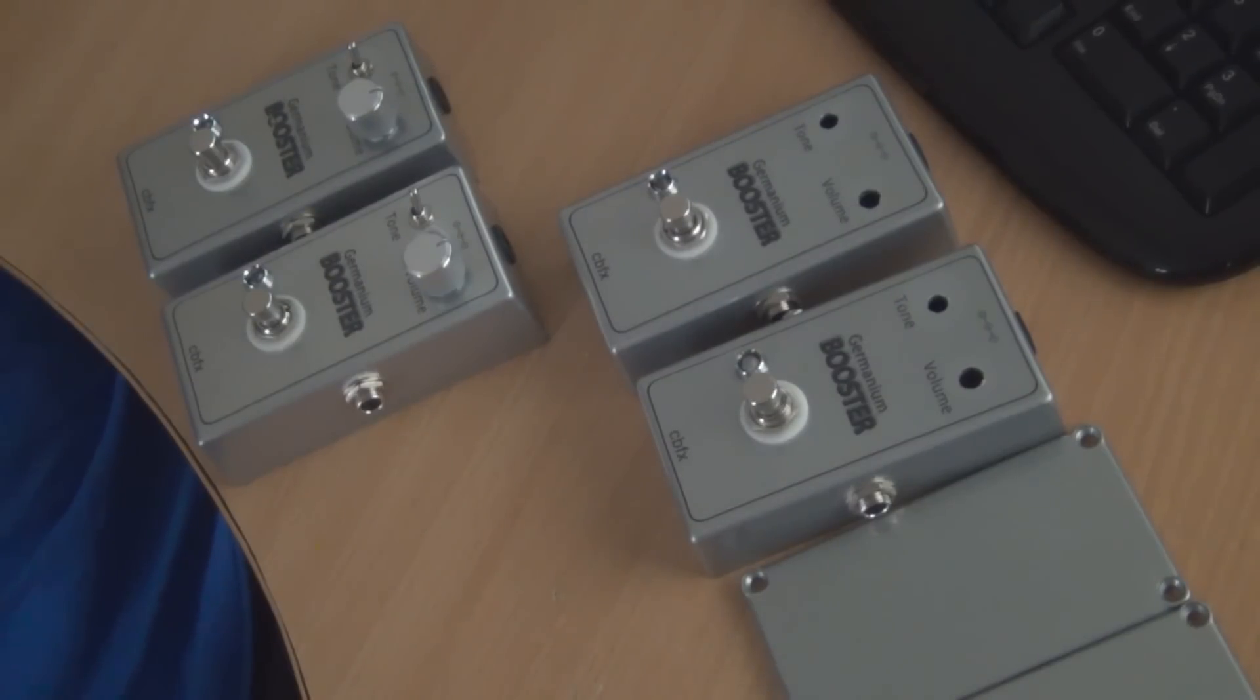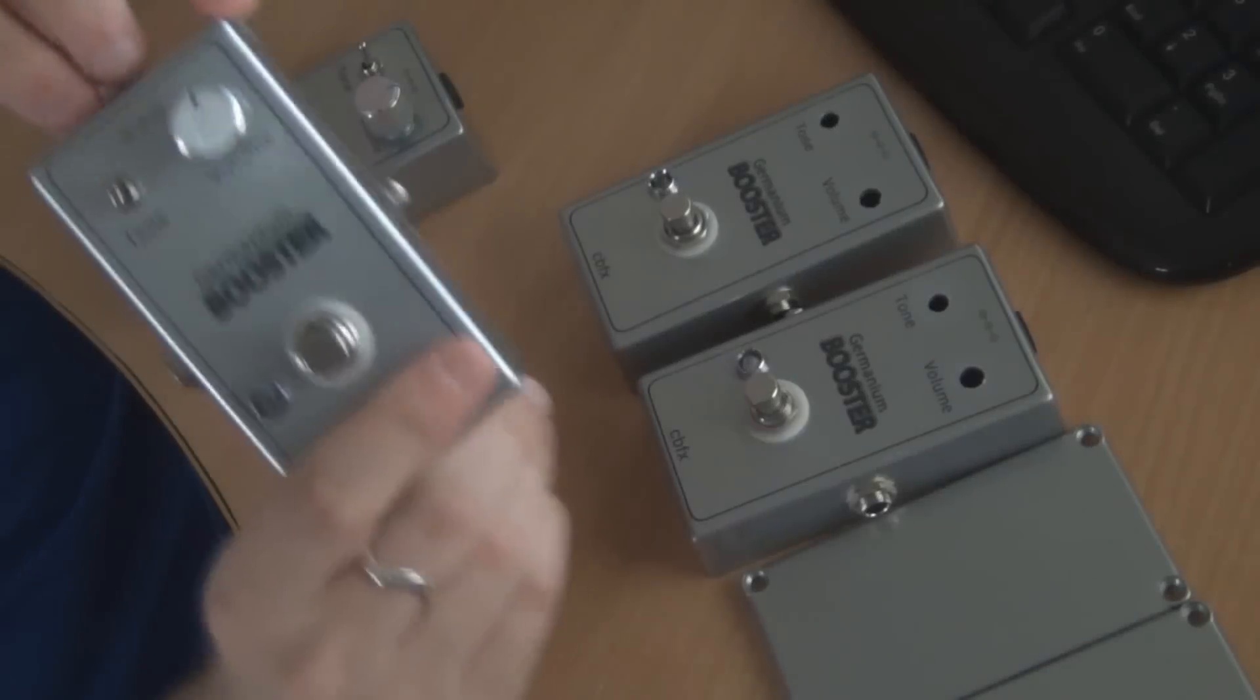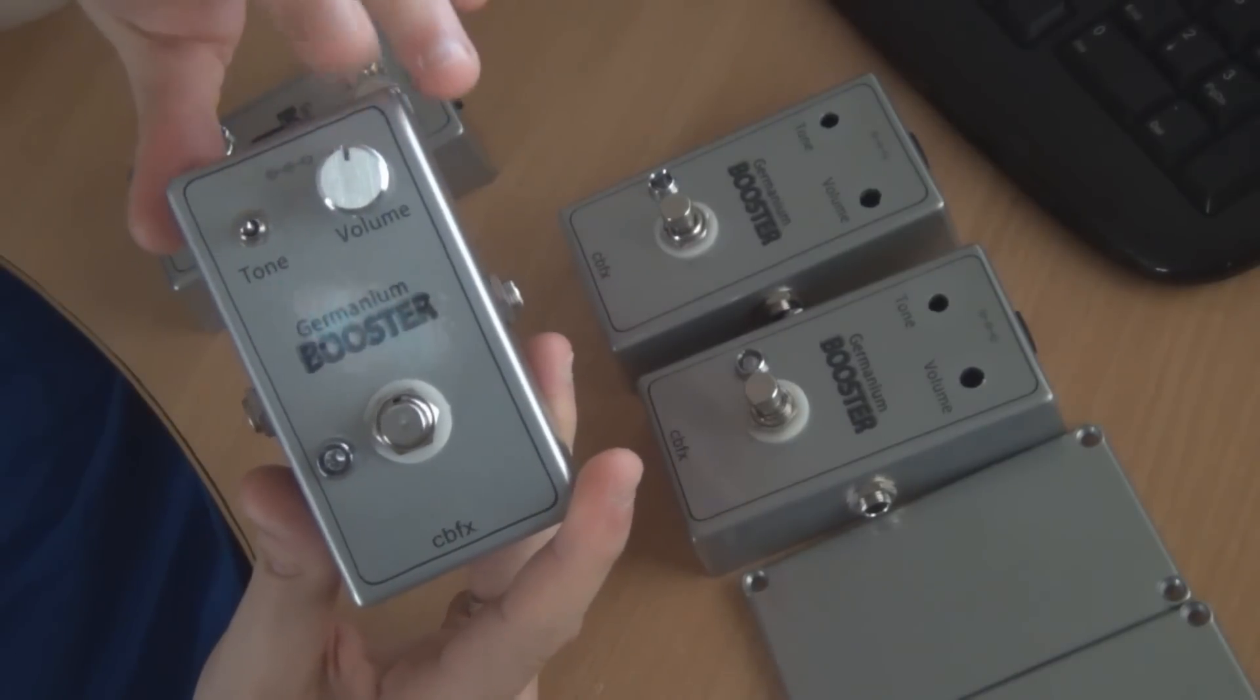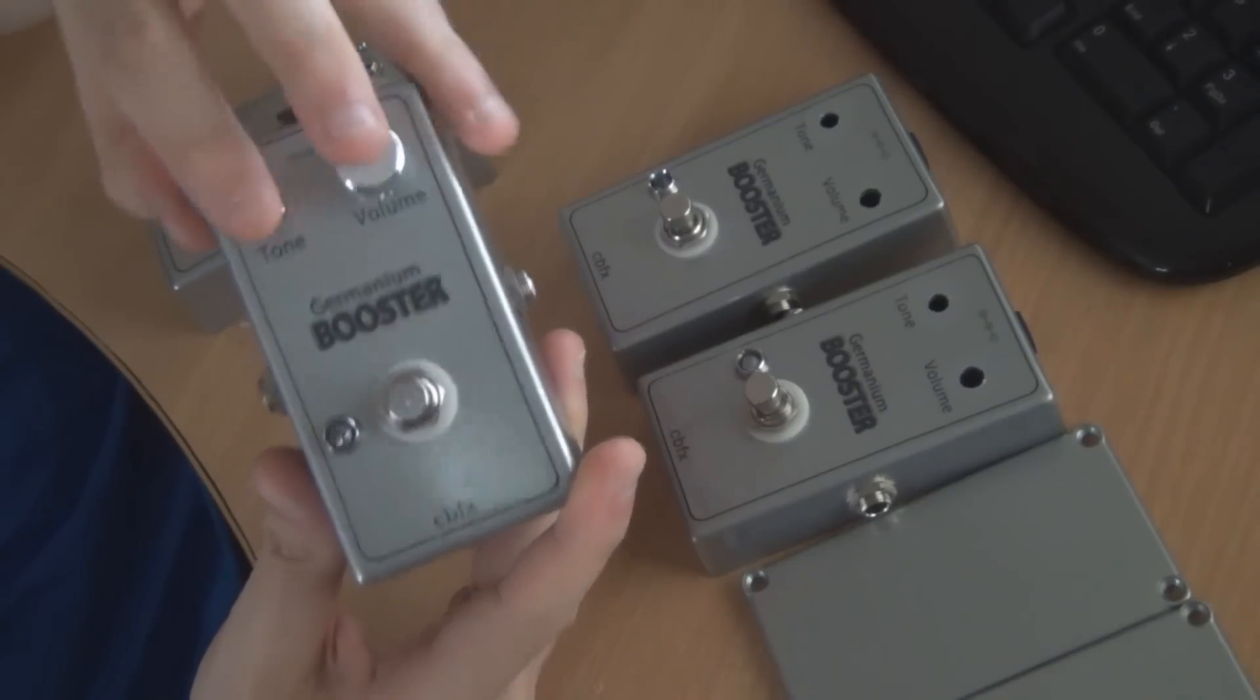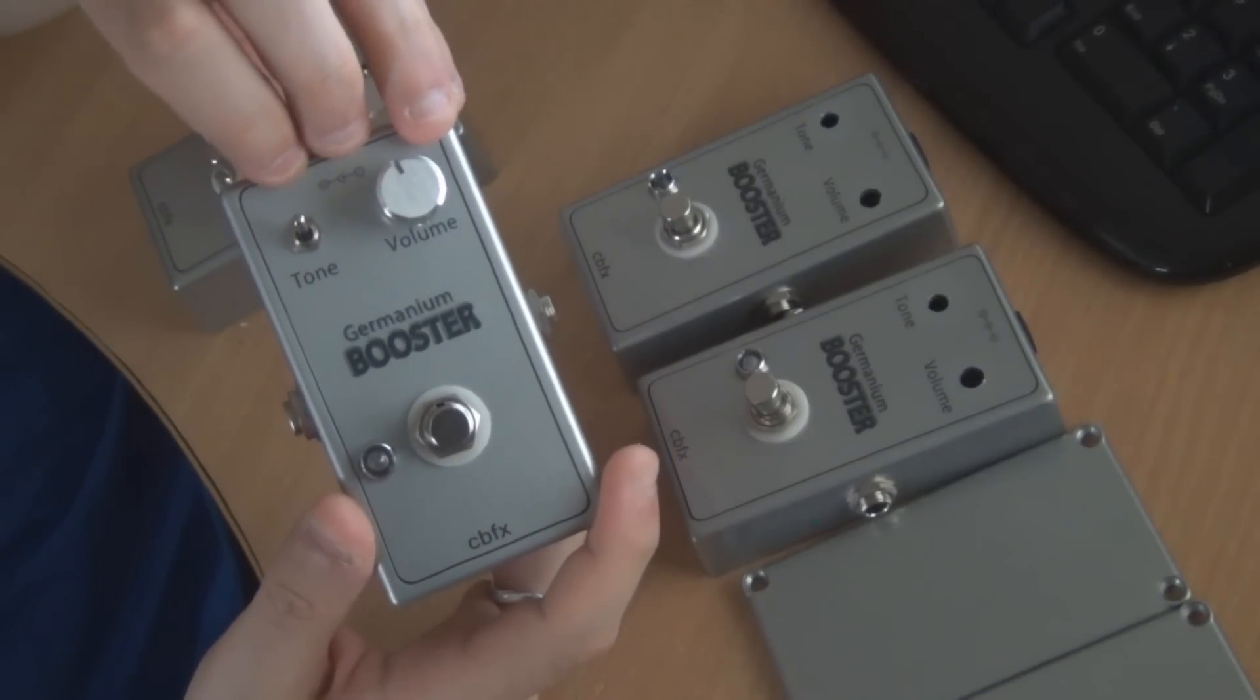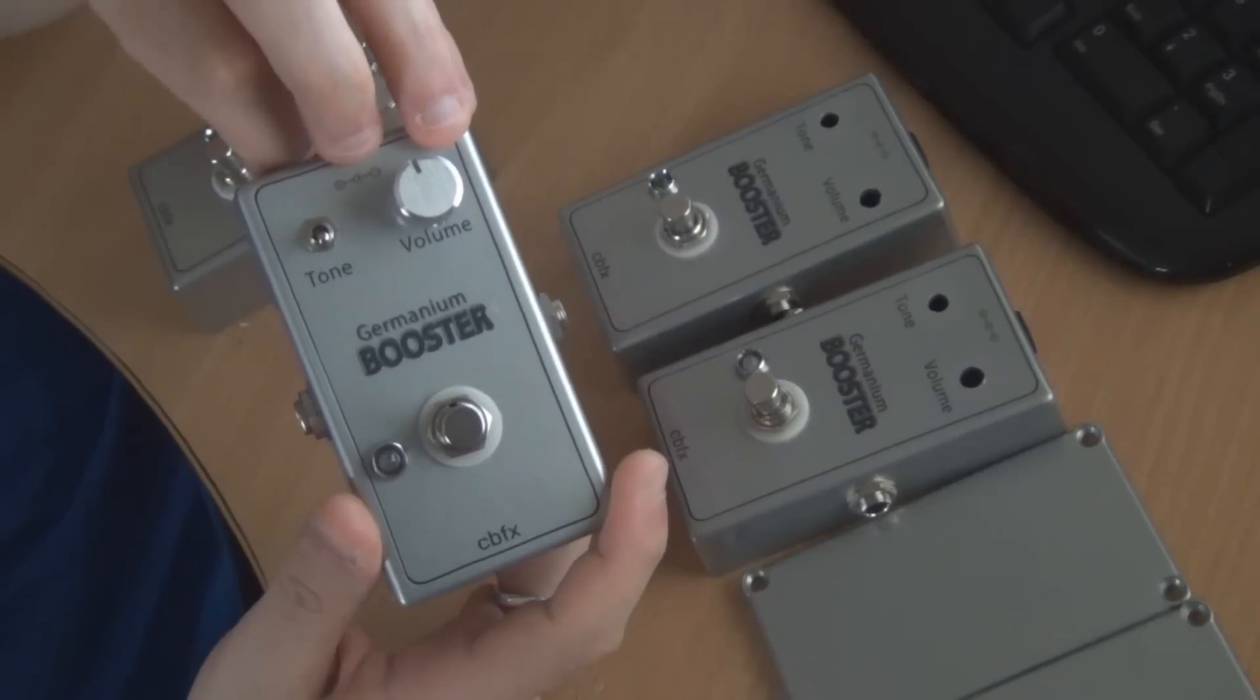It's based on the Rangemaster using a germanium transistor as a booster. I'll go over a few of the features and in a different video I'll do a demo of the actual pedal. The control is pretty straightforward. You've got a tone switch and a volume knob, and the tone switch in the middle setting is treble. When you push it up it's mid and when you push it down it's bass.